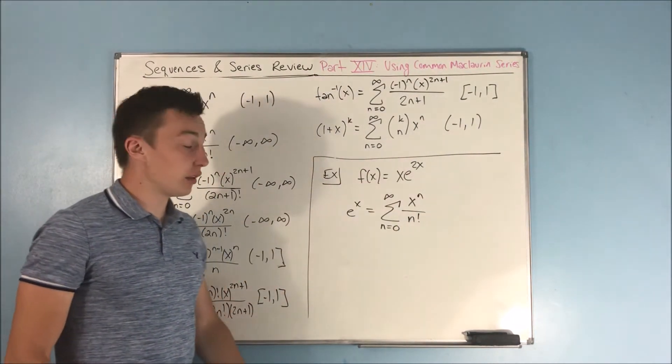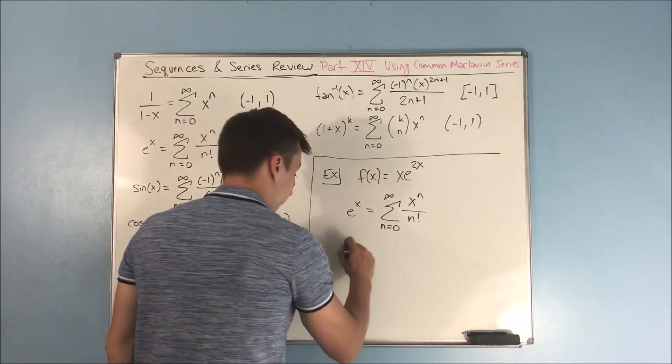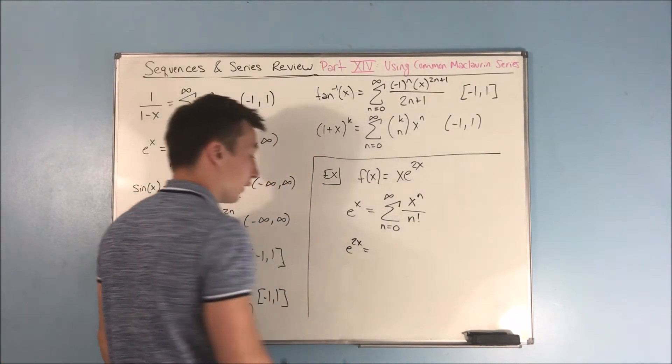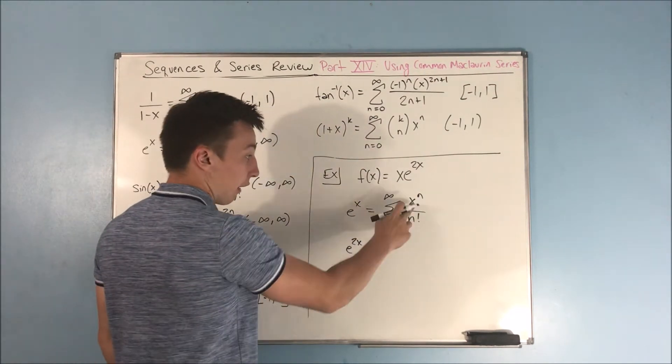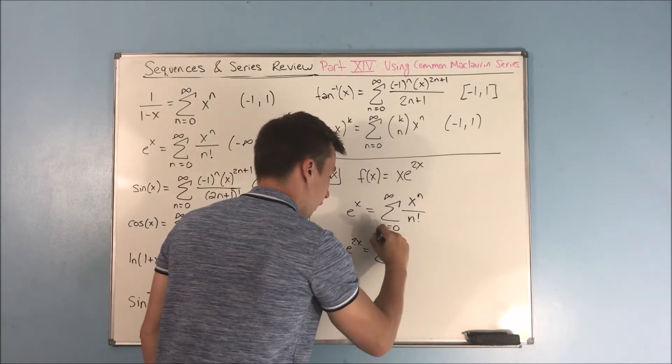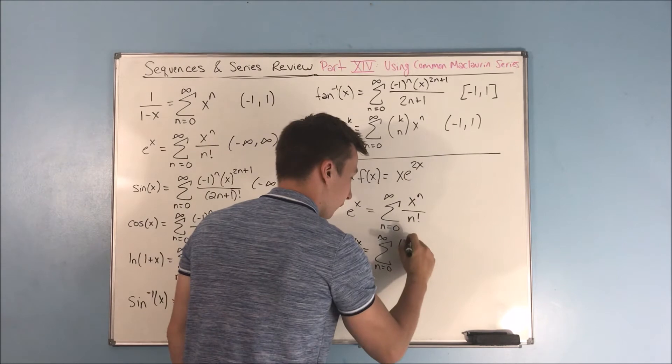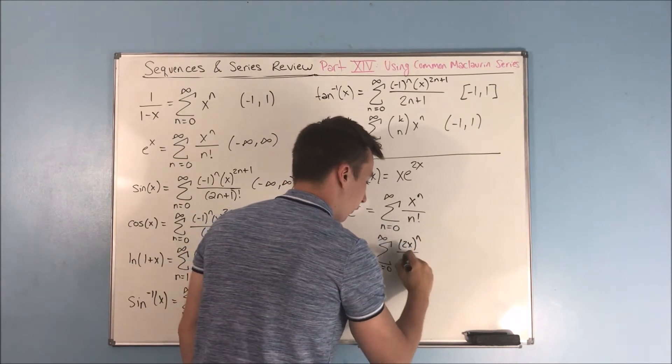equals the sum from n equals 0 to infinity of x to the n over n factorial. Now, the first thing that we can do is plug in that 2x for x. We can find out what e to the 2x is. So what we do is just instead of having an x here, we're going to have a 2x here now.